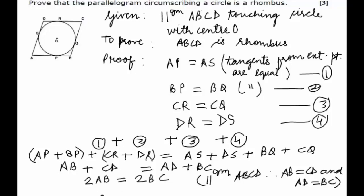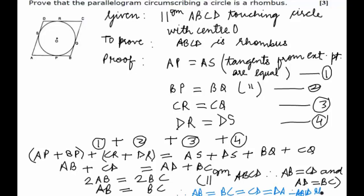Thus we can remove the factor of two from both sides and get AB equals BC. And hence we can say that AB equals BC equals CD equals DA. And hence ABCD is a rhombus. This is the proof of the question.